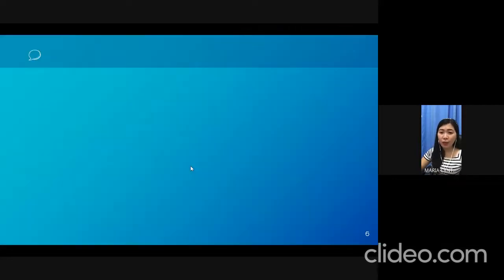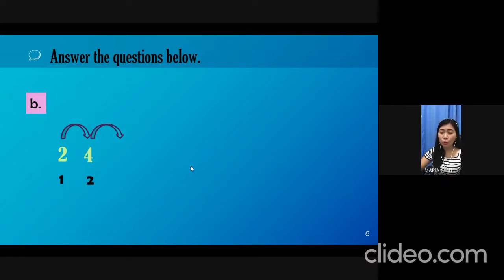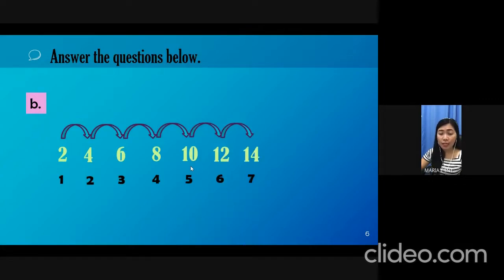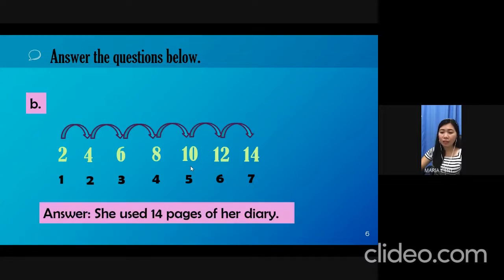Or the other way of solving it is we can skip counting by 2, and then we'll stop on the seventh term. Two, four, six, eight, ten, twelve, fourteen. So, 14 is the seventh term. So, the answer is 14. Now, we have here she used 14 pages of her diary.